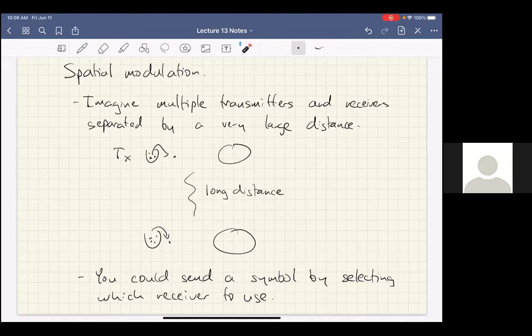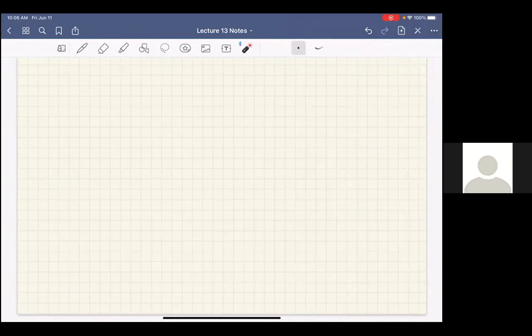We generally do not see spatial modulation in isolation. Instead, it's combined with other forms of modulation. But first, I'm going to think a little bit about a communication system, molecular communication in higher dimensions.